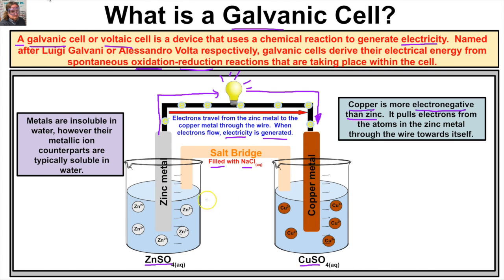This is the basic idea of a galvanic cell: electricity being produced from a chemical reaction taking place between our zinc metal and our copper metal.